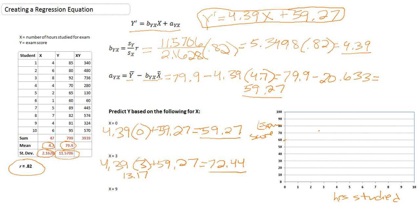Now, let's try to find another point using our regression equation. Let's say we have a student who studied 9 hours. We plug that into our regression equation. We have 4.39 times 9, the number of hours, or x, plus 59.27. Doing the first calculation, 4.39 times 9 is 39.51. If we add that to 59.27, we get 98.78.